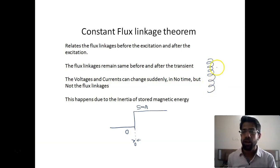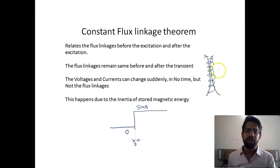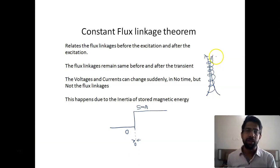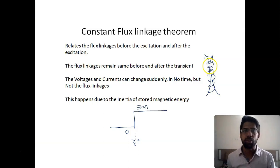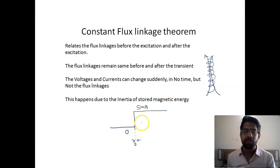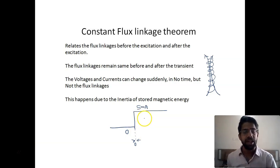But flux linkages cannot change suddenly. Consider a coil with some flux linkage through it — due to current flowing through the inductor or some external current. If the current through this coil changes, ultimately the flux linked to this coil should change, but this change does not occur in zero time as it does for currents and voltages. The constant flux linkage theorem is telling us exactly this: any change in flux linkages does not occur in zero time.